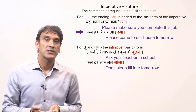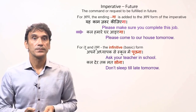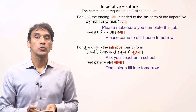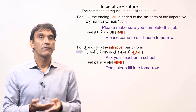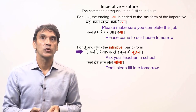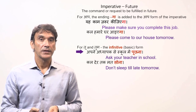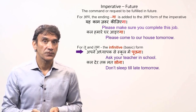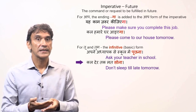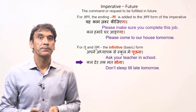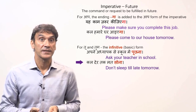'Kal hamare ghar aaiye ga' — please come to our house tomorrow (the expected execution is in the future, i.e., tomorrow). For 'tum' and 'tu,' the infinitive form — the dictionary form of the verb — is used for the imperative future. For example, 'apne adhyapak se school mein poochna' — ask your teacher in school (the expected action is in the future). 'Kal der tak mat sona' — do not sleep till late tomorrow (again, the expected action is in the future).